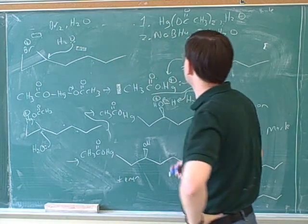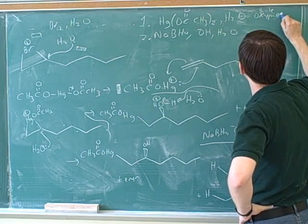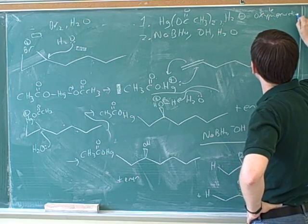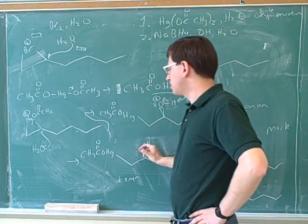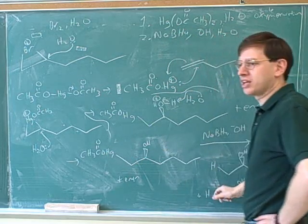Now, just to back up for a second. So I guess this step is called the oxymercuration. And that's demercuration? Because we ended up putting on the oxygen group and the mercury. And this must be demercuration for obvious reasons, because we're getting rid of the mercury.